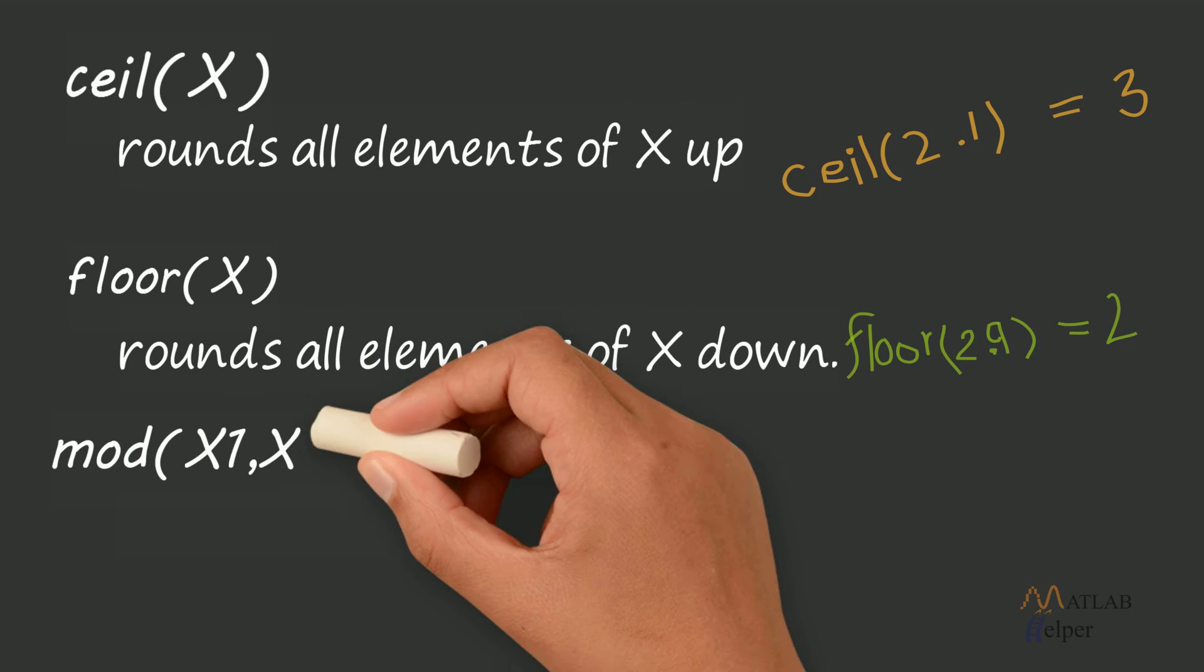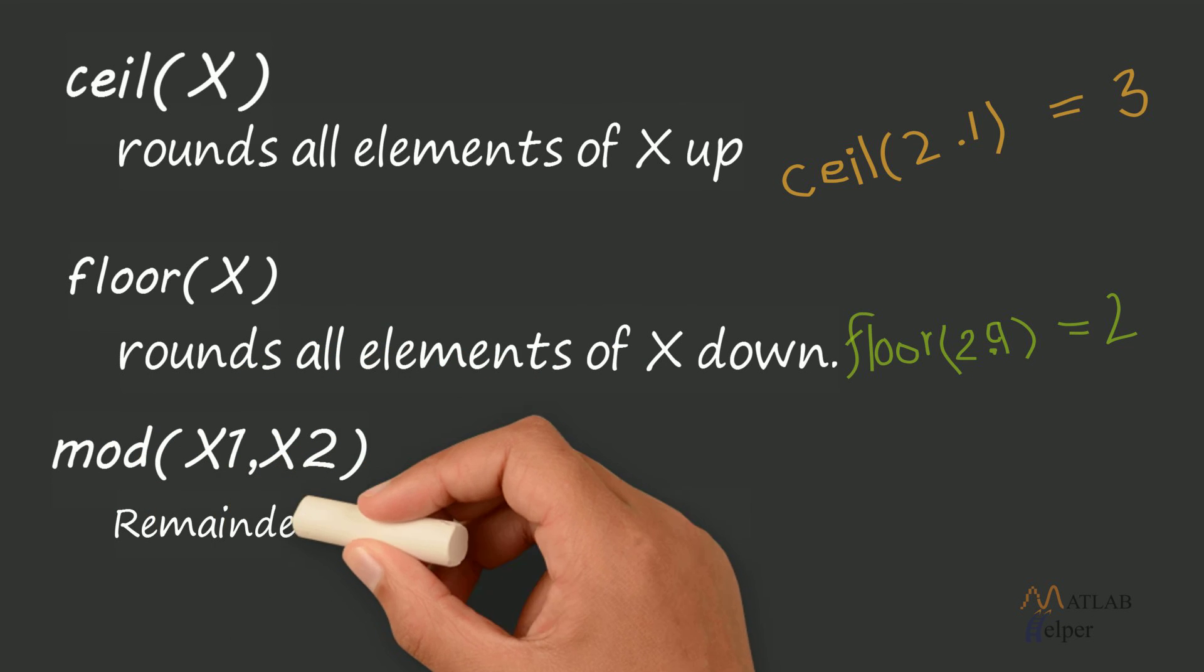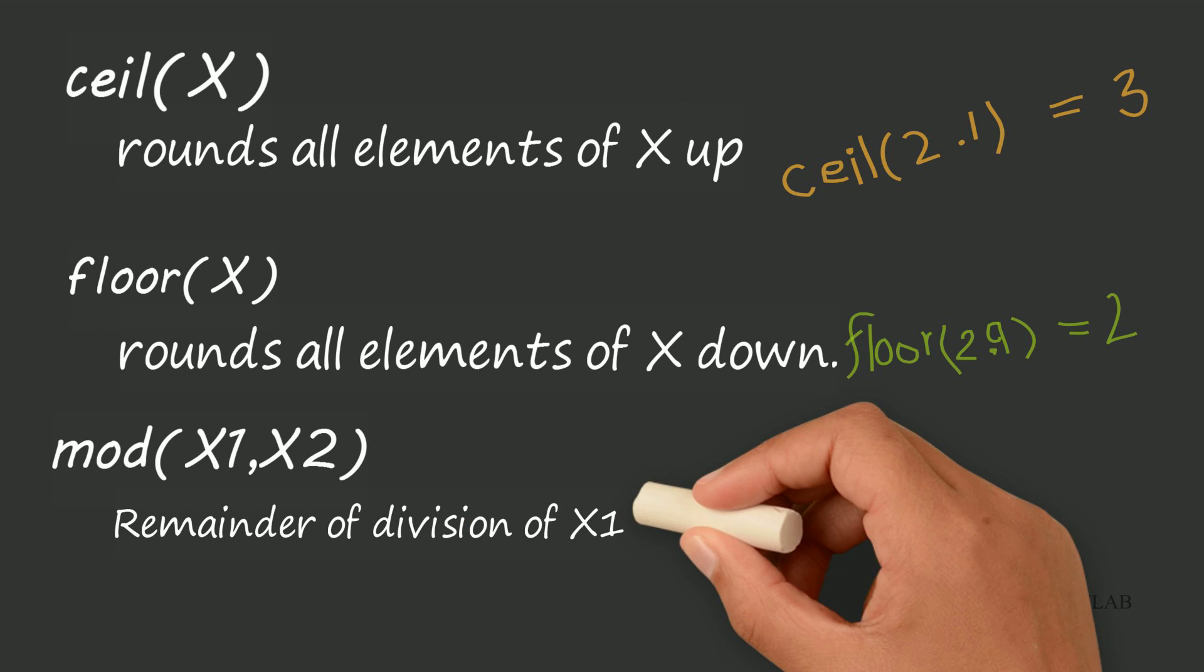mod of X1, X2: This function gives the remainder of the division X1 by X2.